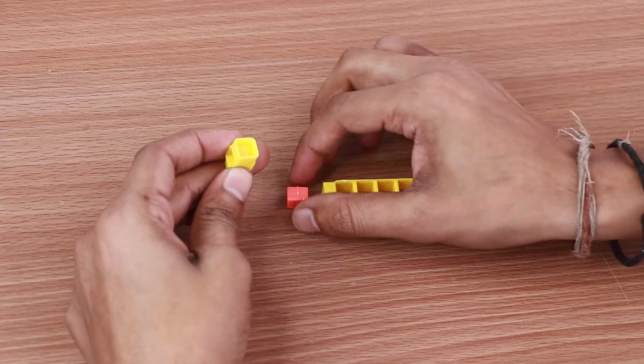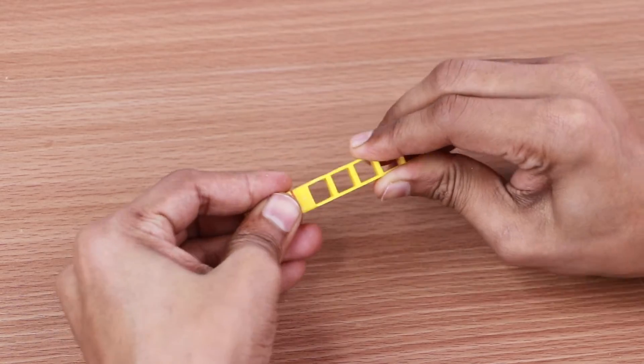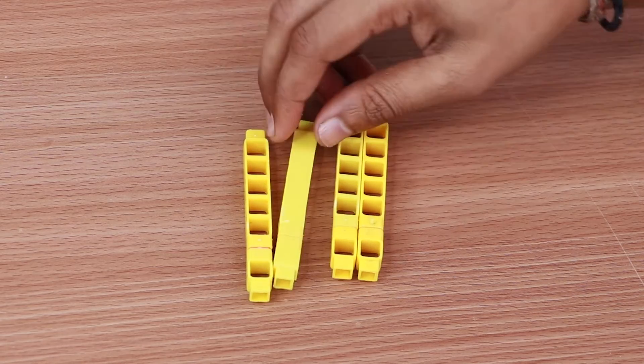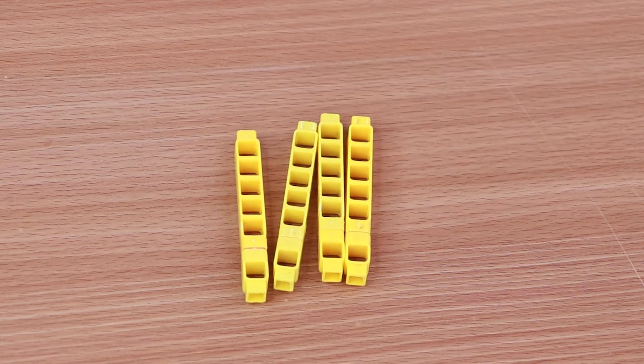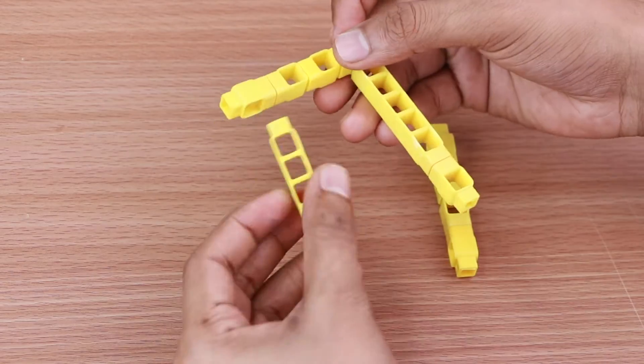Take one one-hole beam, one male-to-male coupler and one five-hole beam and join them together as shown. Repeat this process to make 3 more structures like this. Now take two each of the previous structures and join them in a rectangular manner as shown.